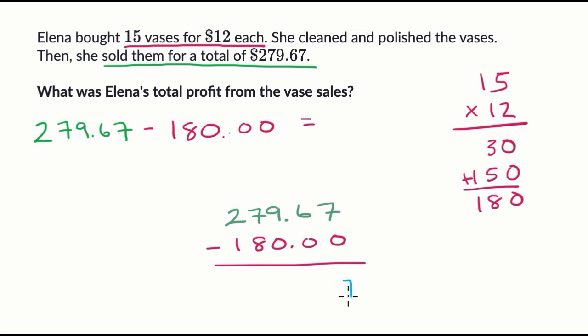Seven minus zero is seven. Six minus zero is six. Nine minus zero is nine. I could just think of 27 minus 18 is nine and put that here. Or I could do a little bit of regrouping. Take one of these hundreds and make that into 10 tens. So 17 minus eight is nine and then I have no hundreds left. So I get a total profit of 99 dollars and 67 cents.